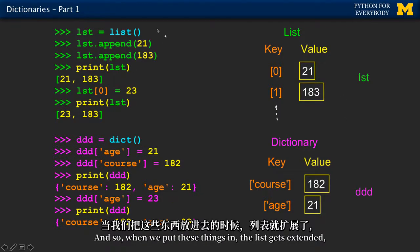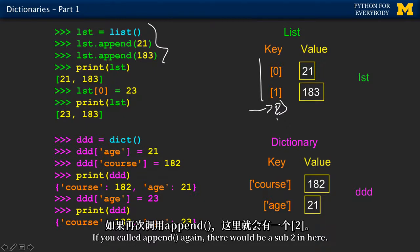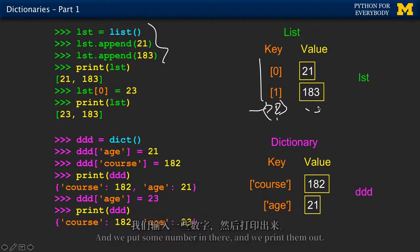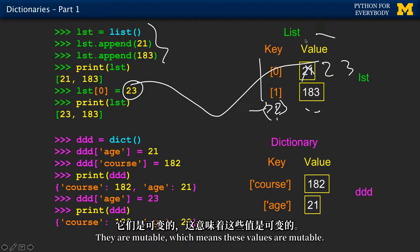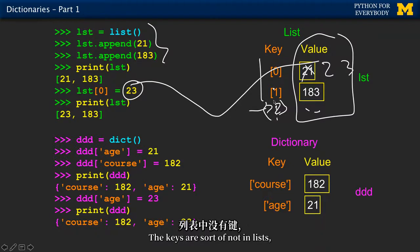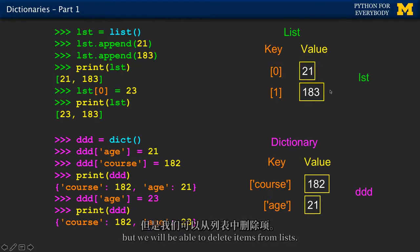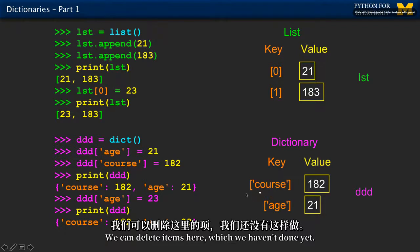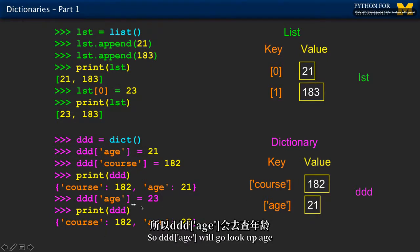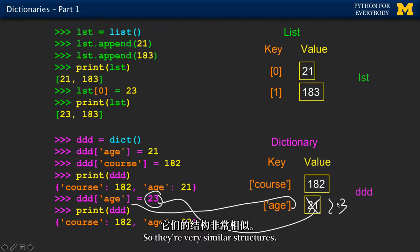And so when we put these things in, the list gets extended. It's always going to be extended at the end. If you had called append again, there would be a sub two in here, and then put some number in there. And we print them out. And then when we go and change this 23, we put it in here. It gets wiped out. They're mutable, which means these values are mutable. The keys are sort of not in list. The keys are simply an artifact. You can't change them, but you can delete items. You can delete items from lists, which we haven't done yet. But we will be able to delete items from lists. And so the same thing is true. We can delete items here, which we haven't done yet. But you can also change them. So dd sub age, we'll go look up age and then stick 23 in there. And that's changing. So they're very similar structures.